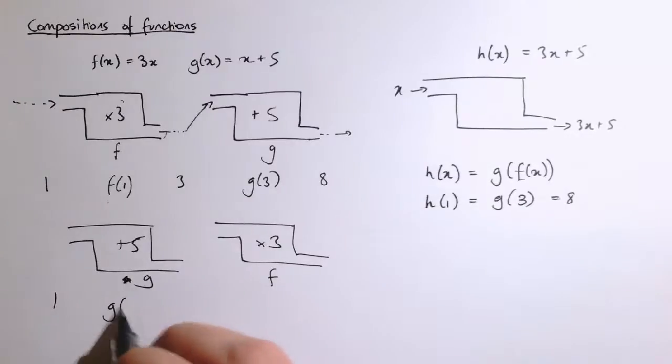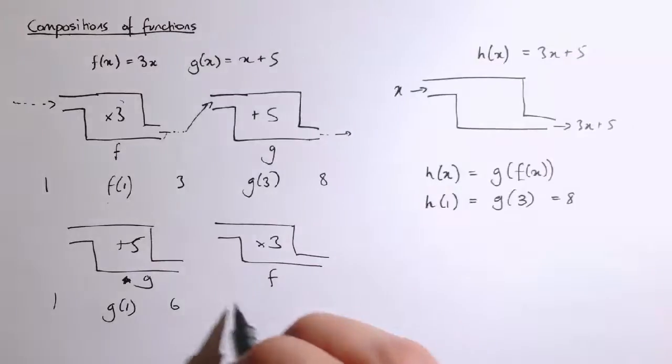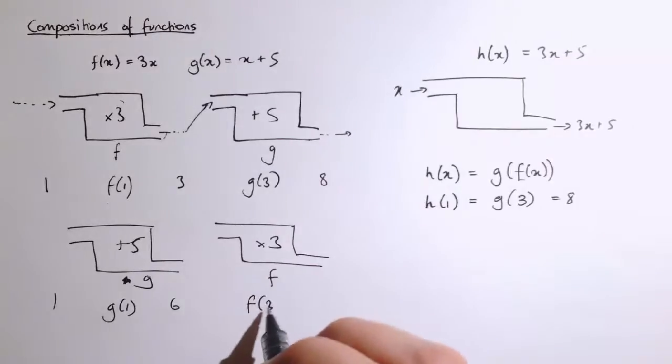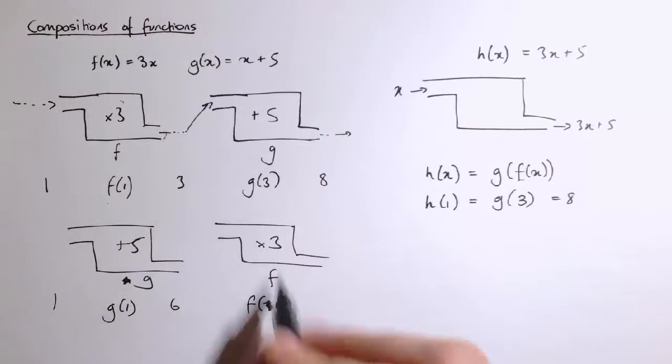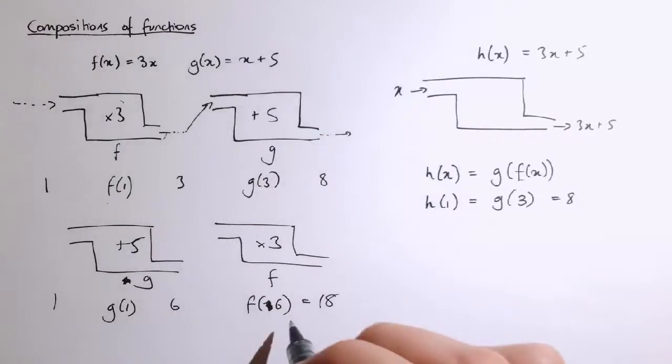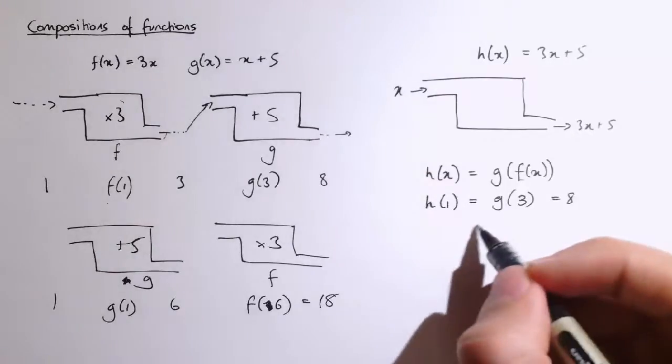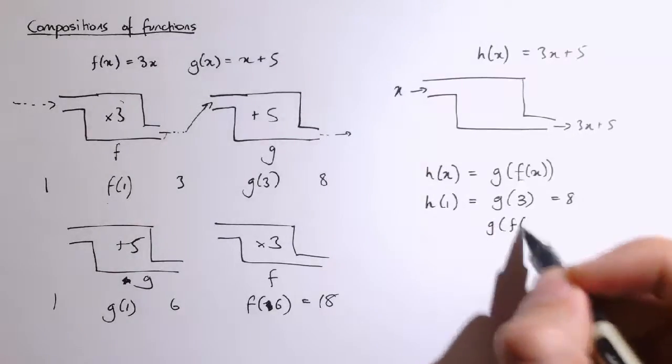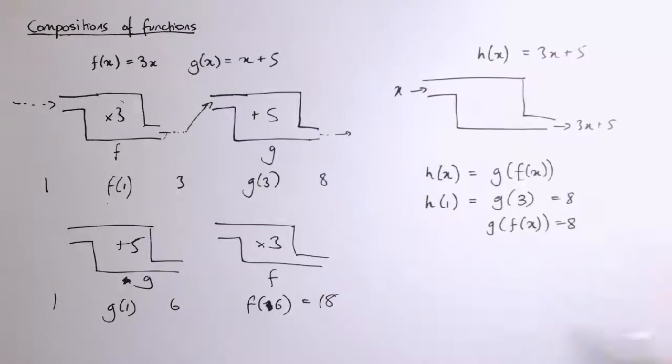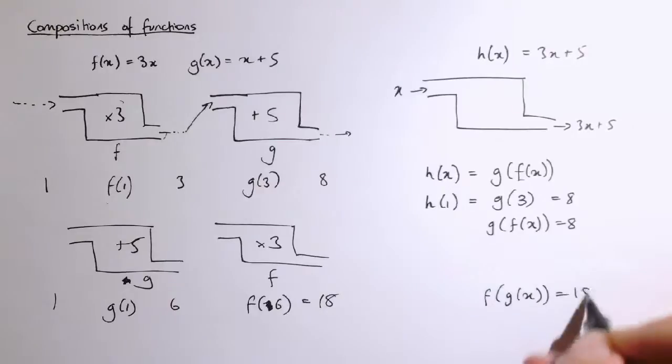So if I do g of 1, that just adds 5 and gives us 6, and then we multiply it by 3, so we get f of 6 is 3 times 6, which is 18, so that's giving us 18 instead of 8. So we've got that here g of f of x equals 8, whereas doing it the other way around, f of g of x equals 18. It's going to seem a little bit confusing at first, but you'll see and get used to the notation.